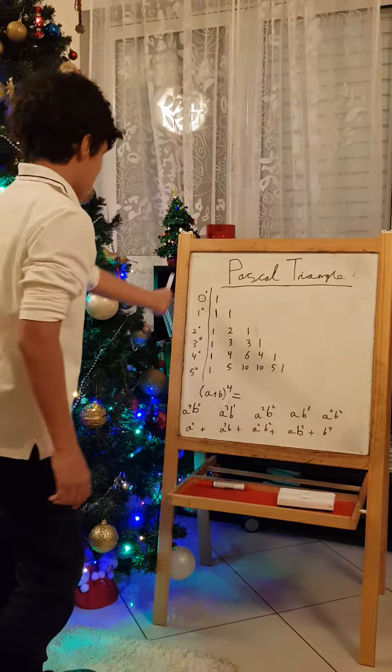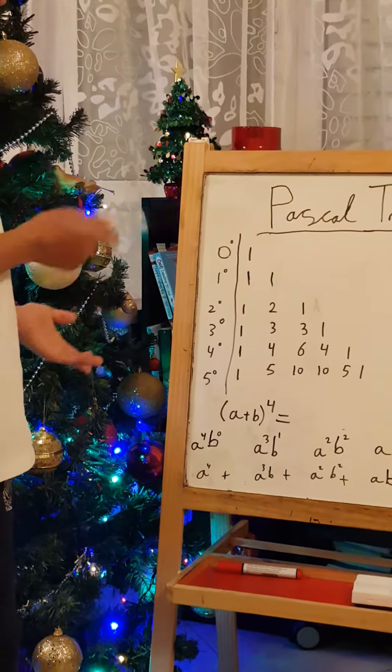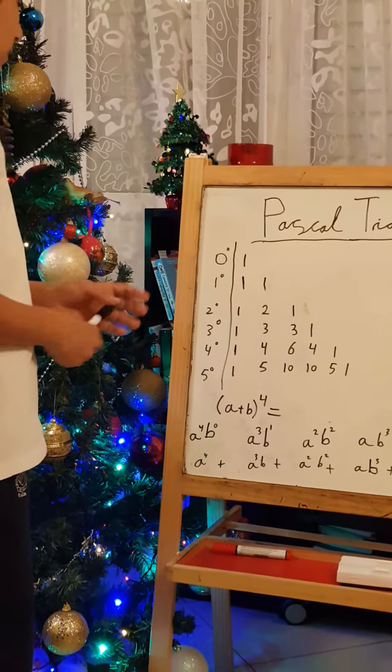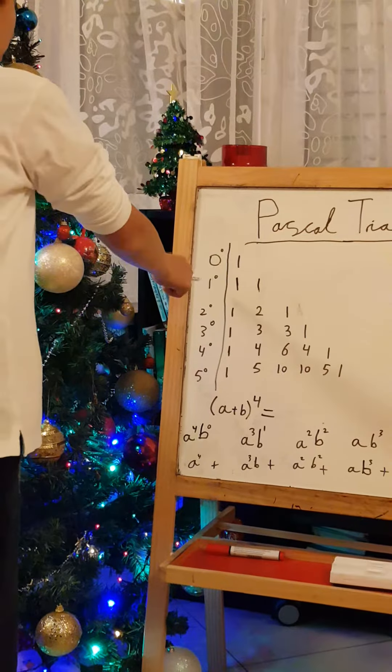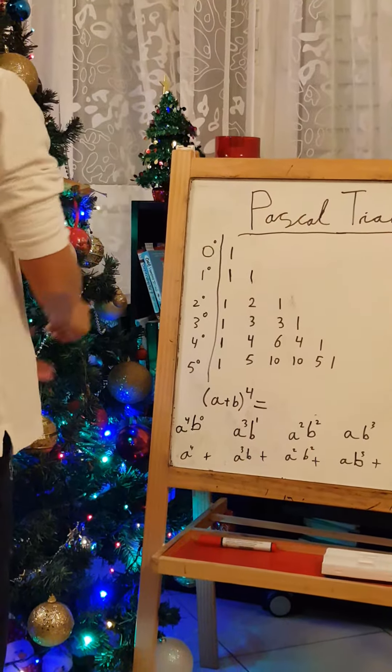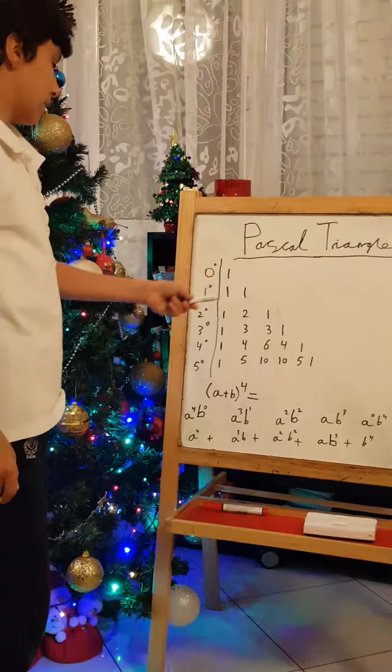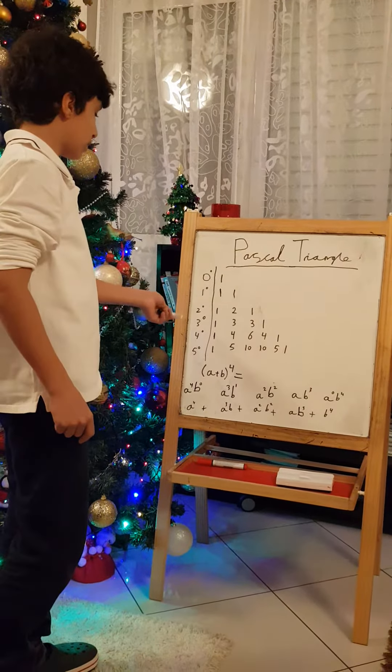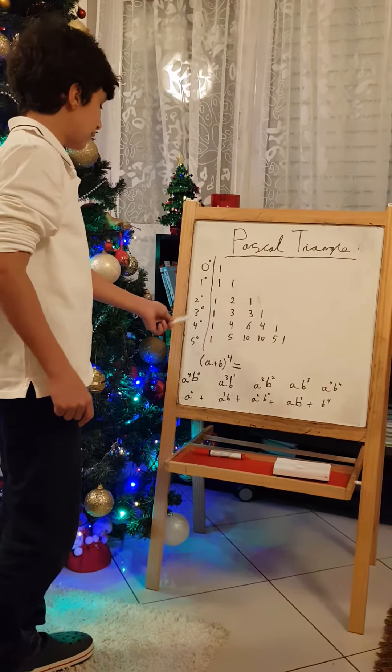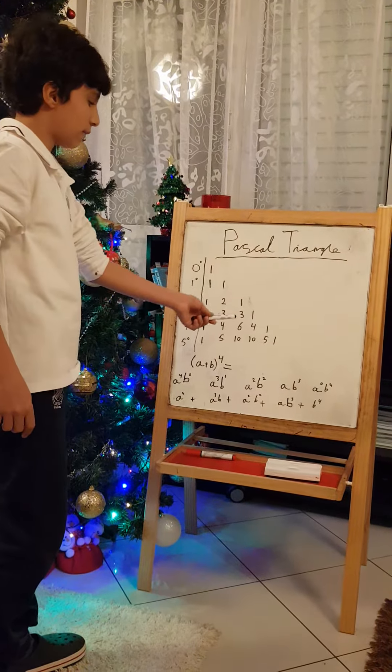Now, the degrees here. 0 degree is 1, so any value to the power of 0. The first degree is 1, 1. The second degree is 1, 2, 1. The third degree is 1, 3, 3, 1. The fourth degree is 1, 4, 6, 4, 1. The fifth degree is 1, 5, 10, 10, 5, 1.